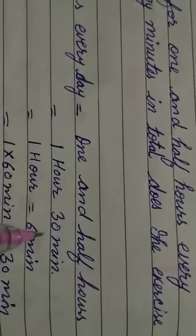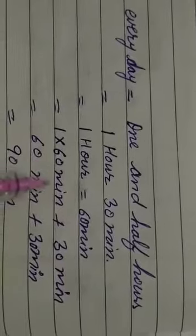Exercise 10.5, Question number 1: Rashi exercises for 1 and a half hours every day. How many minutes in total does she exercise in 7 days? Rashi exercises 1 hour 30 minutes every day. One hour equals 60 minutes, so 1 hour 30 minutes equals 60 plus 30 equals 90 minutes.